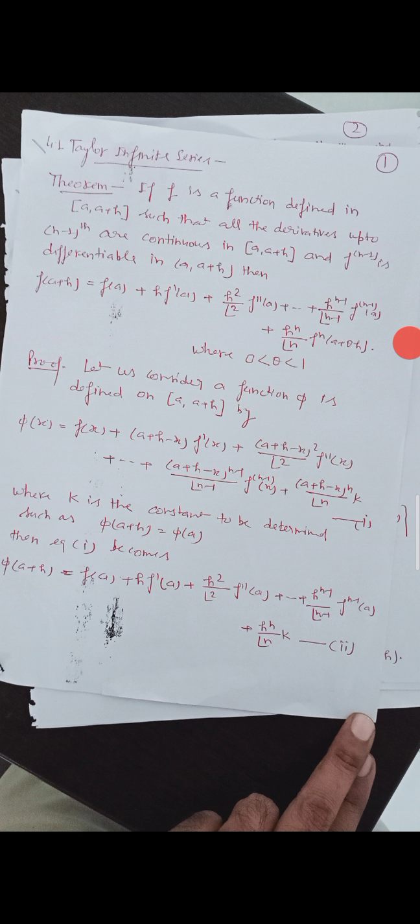Today we will discuss Taylor's finite series. If f is a function defined in [a, a+h] such that all the derivatives up to n minus one are continuous in [a, a+h] and f to the power n minus one is differentiable in (a, a+h), then f(a+h) equals f(a) plus h·f'(a) plus h²/2! · f''(a) plus ... plus h^(n-1)/(n-1)! · f^(n-1)(a) plus h^n/n! · f^n(a + θh), where 0 < θ < 1.